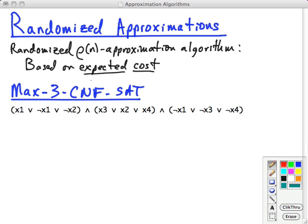The example we'll use is called Max-3-CNF-SAT. Remember that 3-conjunctive normal form is a form of a logical expression where you have a disjunct of three literals. A literal is a variable or its negation and there's a conjunction of those disjuncts.